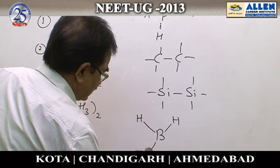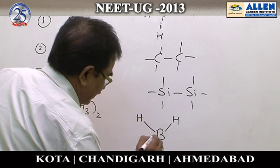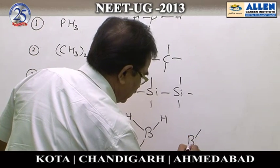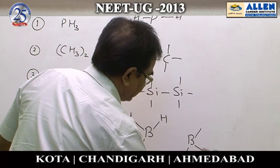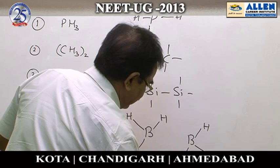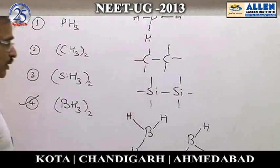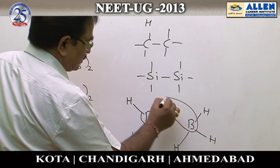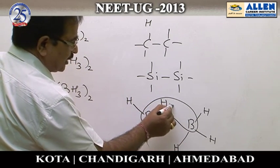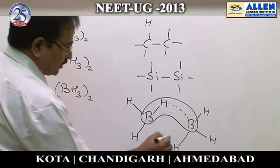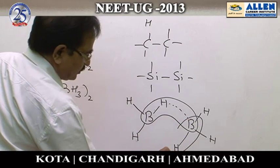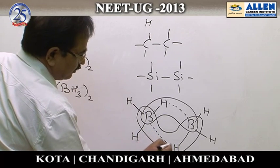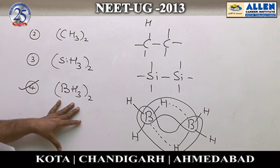Option number 4 is the correct answer: B2H6. B2H6 is the dimer of BH3. It contains 2 banana bonds, that is, 2-electron 3-centered bonds. Molecules having 2-electron 3-centered bonds are electron deficient. B2H6 has 2 such bonds, so the answer is option 4.